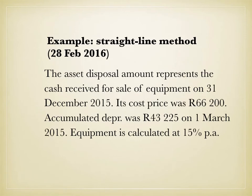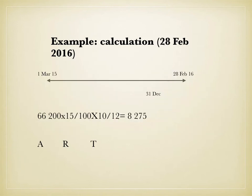Using the same example: cost price 66,200, accumulated depreciation 43,225 on 1 March 2015, and a rate of 15% per annum. Applying ART: Amount = 66,200; Rate = 15/100; Time = 10/12 (from 1 March to 31 December 2015). This gives us 8,275.